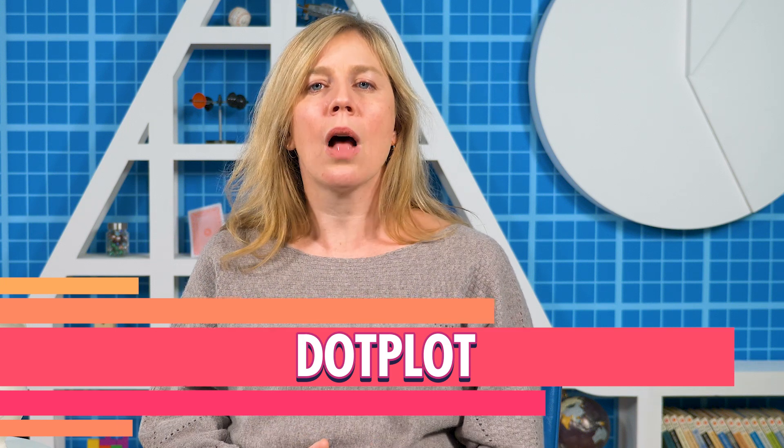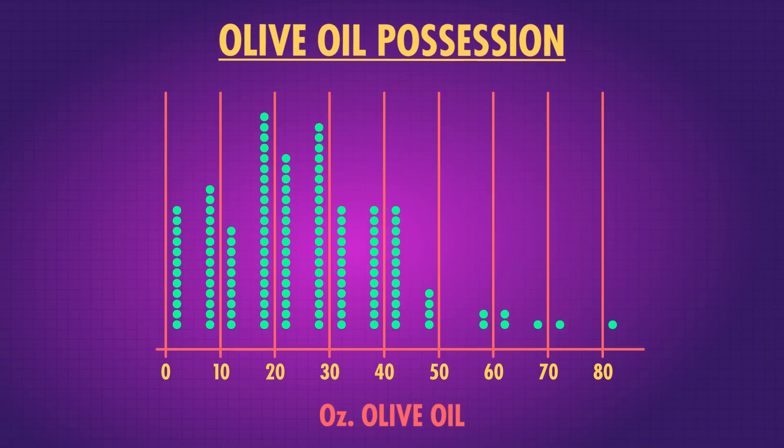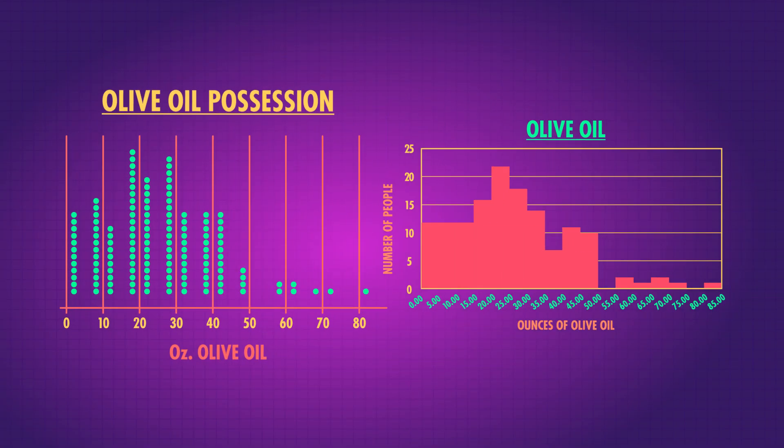Last episode we looked at histograms, which use the height of a bar to show how frequently data occur. We can also use this format to make a dot plot. A dot plot takes a histogram and replaces the solid bars with dots — there's one dot for each data point contained in the bar, so we can just count the number of dots to find out how many there are. The dot plot for our olive oil data looks like this, unsurprisingly similar to the histogram for that data.